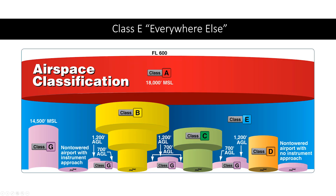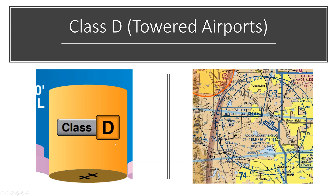Class E is everywhere — you can see it above the various airspaces and in the little corners around them. Class D airspace is the cylinder I mentioned, and on the sectional chart you can find it like this: if an airport is shown in blue, that means it has a control tower, and if it has a blue dashed circle around it, that means it's class D airspace. We're not allowed in class D airspace, so as long as we stay on the outside of that circle, we're good.